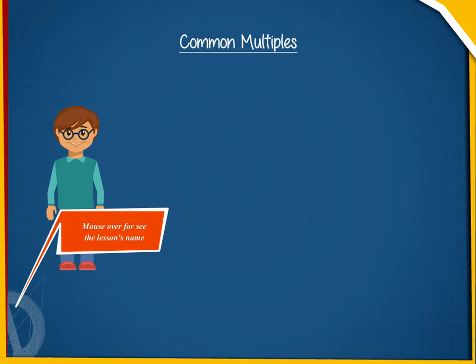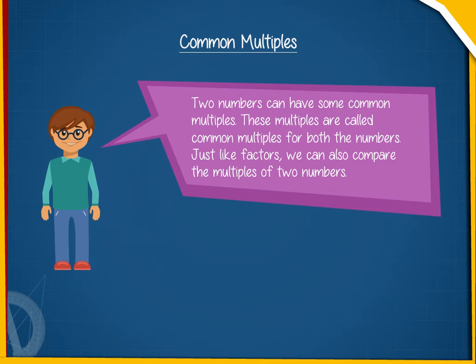Common multiples: Two numbers can have some common multiples. These multiples are called common multiples for both the numbers. Just like factors, we can also compare the multiples of two numbers.